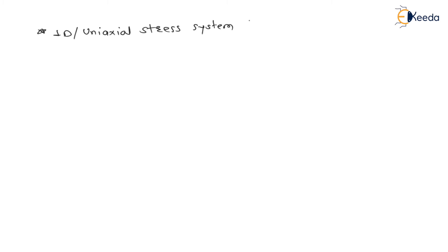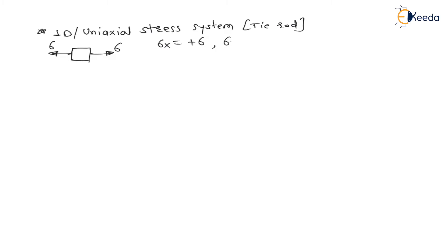Let us do the analysis for a tie rod. The element on the tie rod is subjected to tensile load sigma. So sigma x = +sigma (tension means positive stress), sigma y = 0 (no stress along y), and tau xy = 0 (no shear stress).